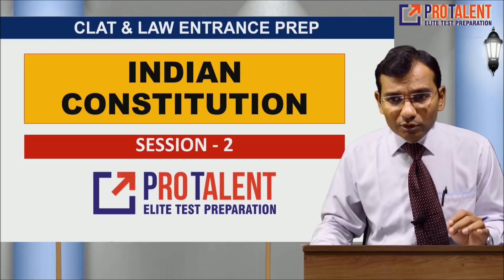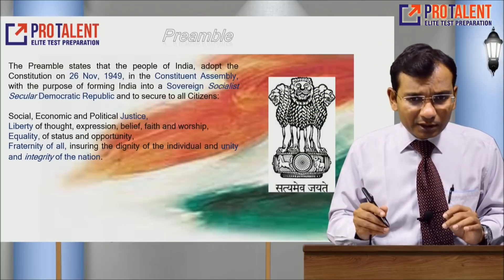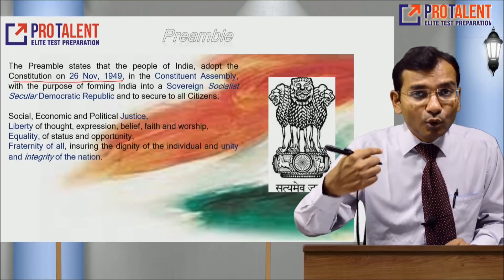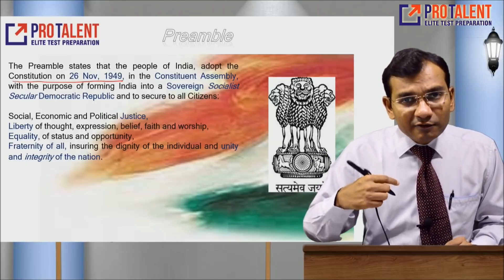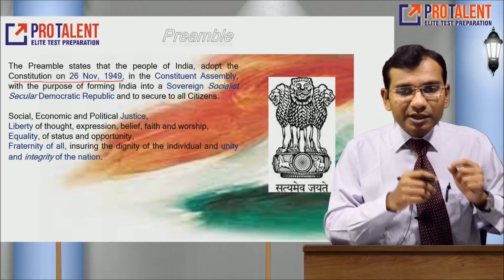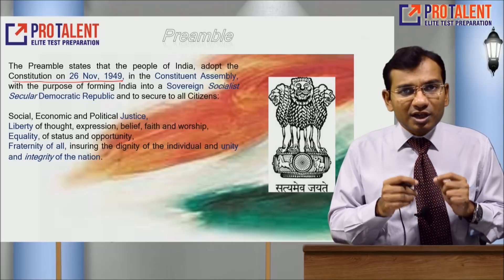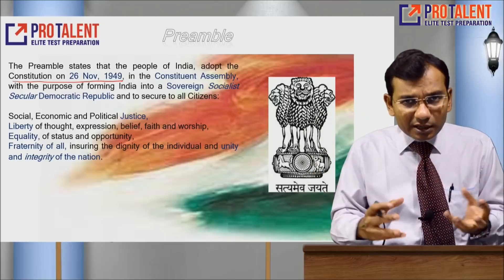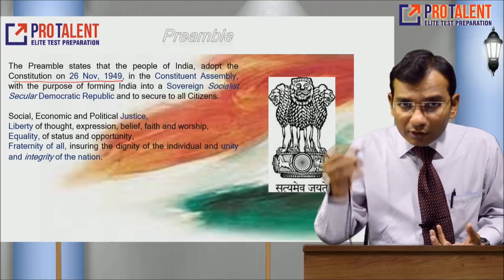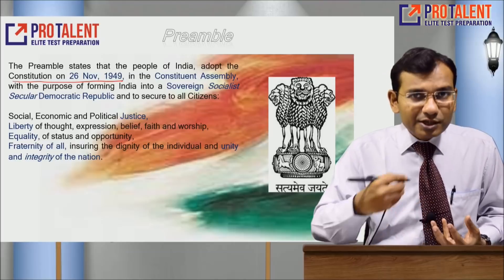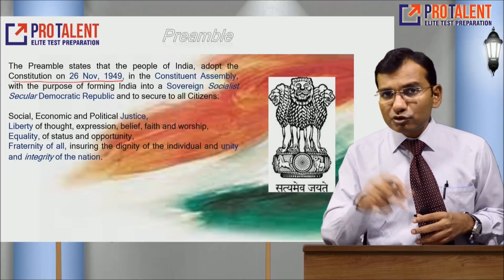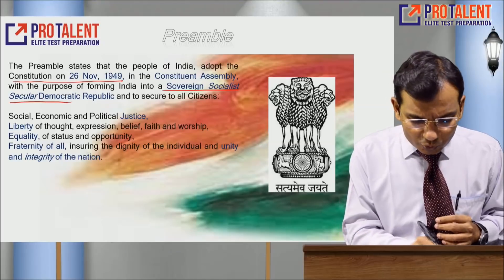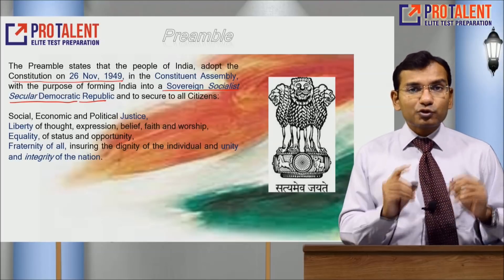Let me start session two on Indian Constitution with the preamble. The preamble was made by 'We the People of India' — we made it and gave it to ourselves on 26 November 1949. The head of the Constituent Assembly was Dr. Rajendra Prasad. Within it were various drafting committees, and the drafting committee — which wrote the entire argument — was chaired by Dr. B.R. Ambedkar. He envisaged India to be sovereign, socialist, secular, democratic, and republic.